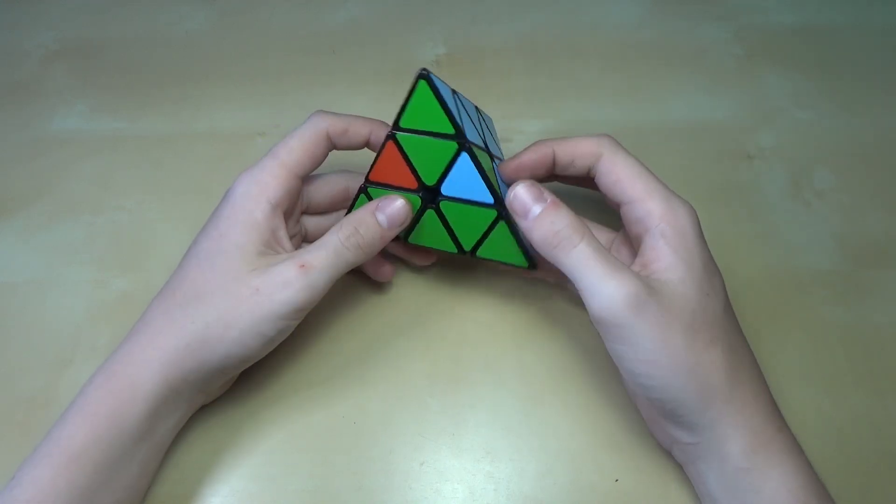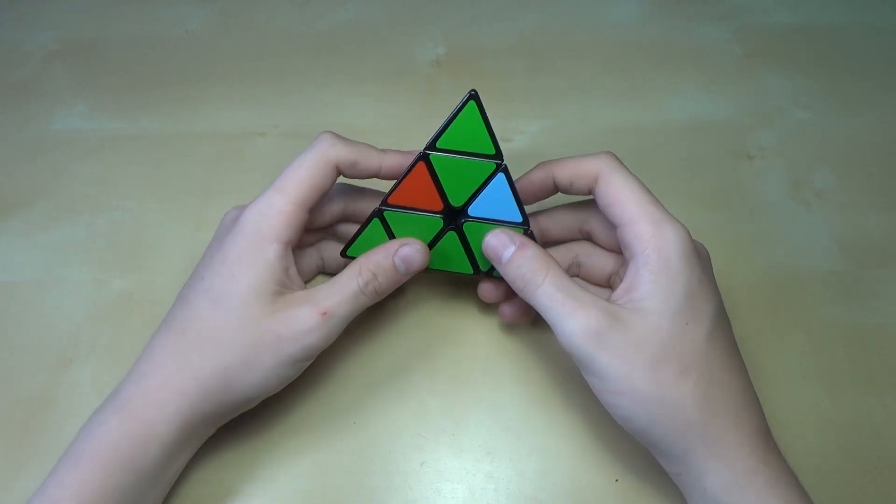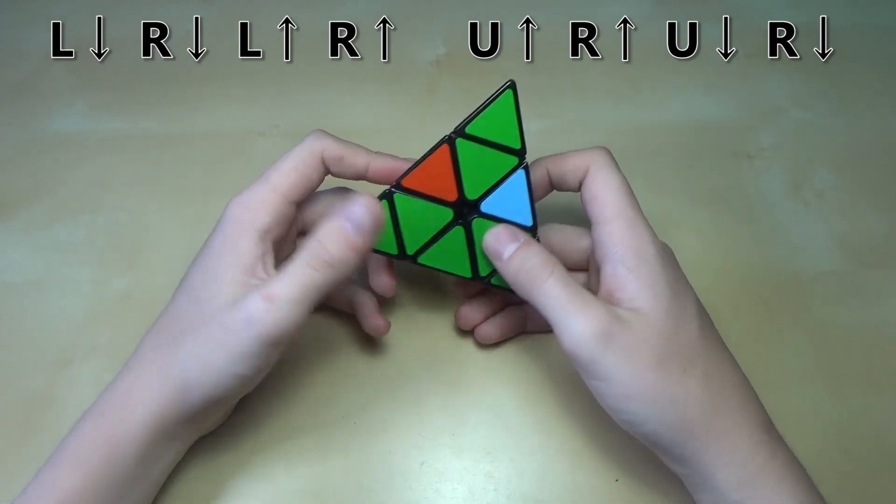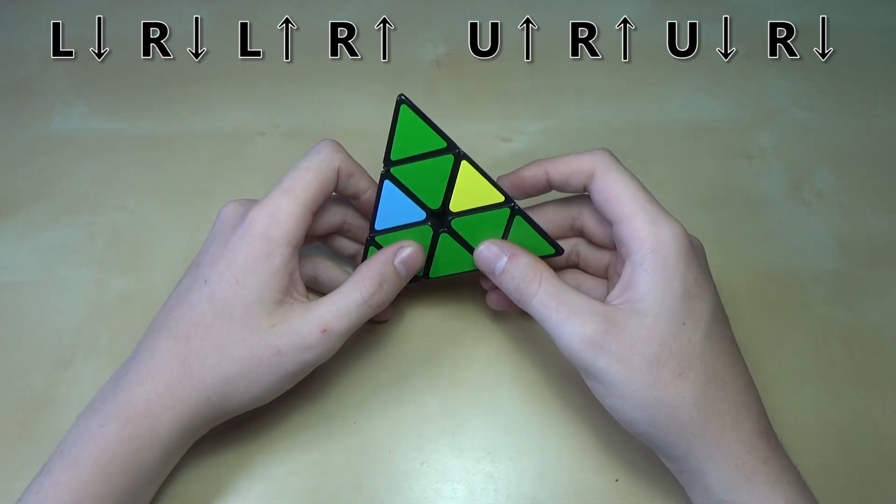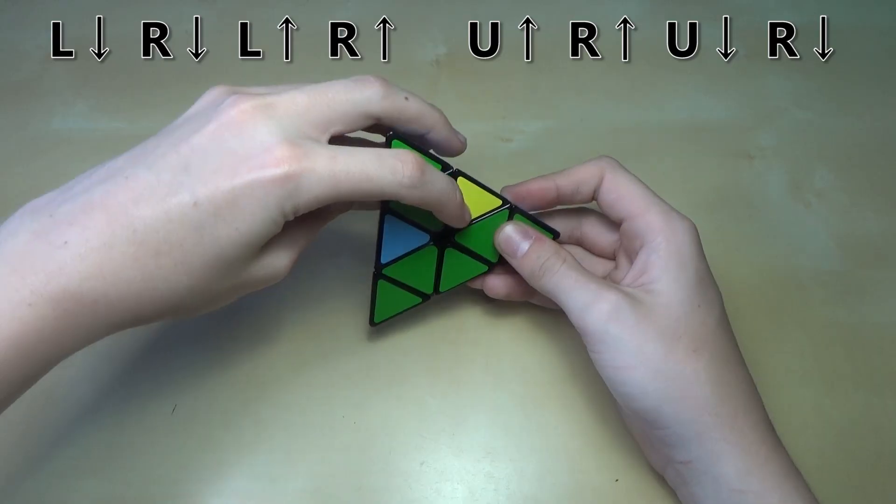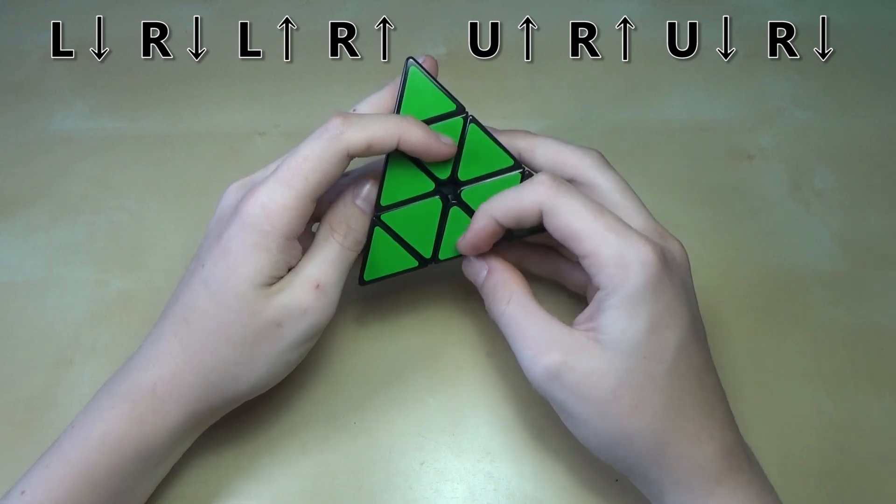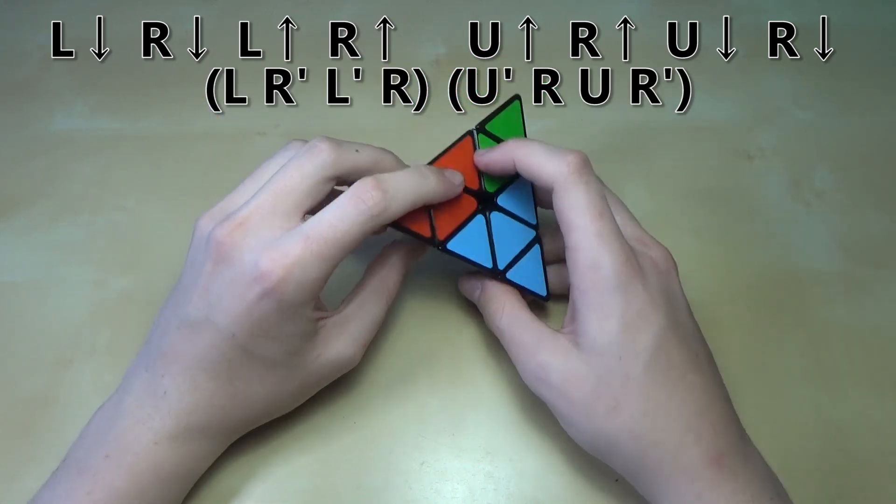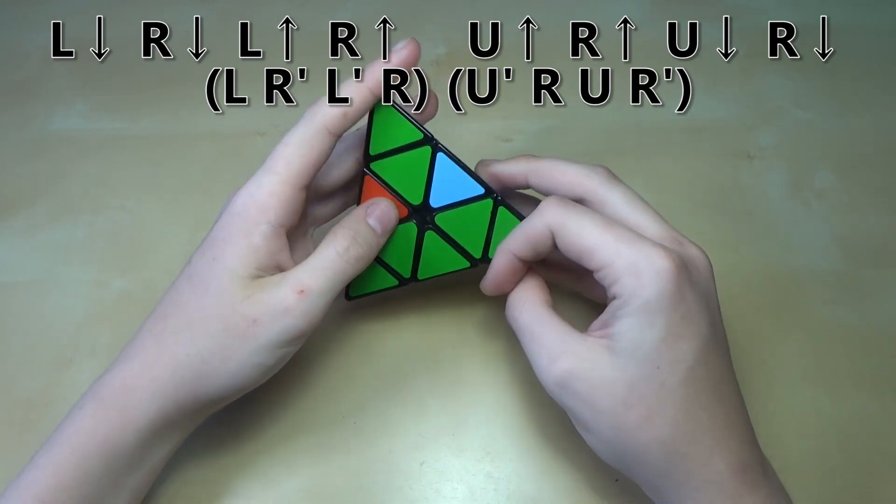What you want to do is, I'm not going to explain this in notation because I know a lot of you may not know that yet. So what you're going to do is you're going to do one of those like down, down, up, up moves starting on the left side. So you go left, down, right, down, left, up, right, up. Just like that. And then don't let go of the cube yet. You're going to shift your hand from the left to the top. And then you go top, up, right, up, top, down, and right, back, down. And so if you want that in notation, it is L, R prime, L prime, R, U prime, R, U, R prime.